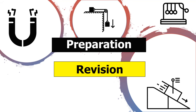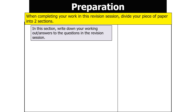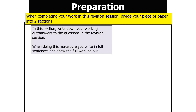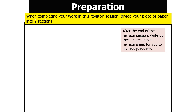How should you prepare for this revision session? When you're completing your work, divide your piece of paper into two sections. Make the left-hand side larger than the right. On the left, write down your answers and working out, using full sentences and full working. On the right, write down any useful information or hints and tips. At the end of the session, write these notes up into a revision sheet.